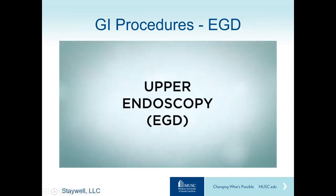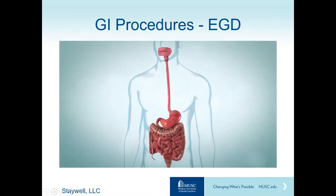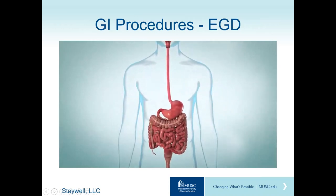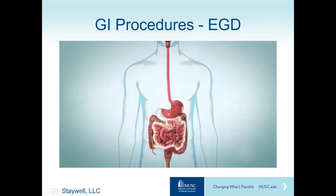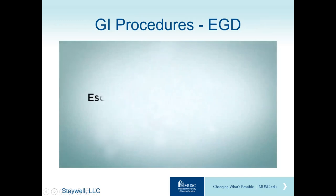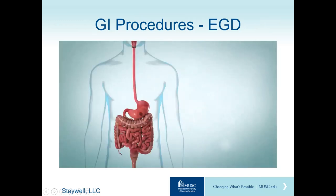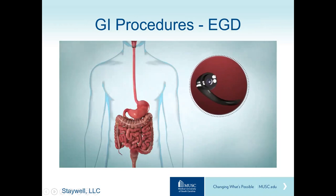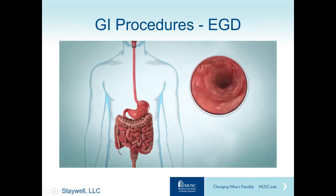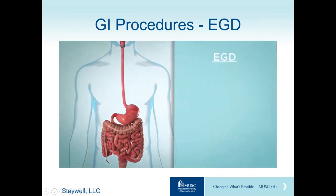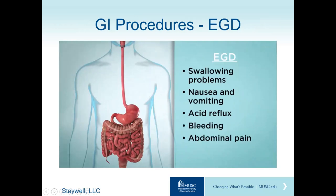Upper endoscopy is a test that looks inside the upper gastrointestinal tract, including the esophagus, stomach, and duodenum — the first part of the small intestine. Also known as esophagogastroduodenoscopy or EGD, it uses a long, thin, flexible endoscope with a light and tiny camera. The test helps find ulcers, infection, or growths, and can show the causes of swallowing problems, nausea and vomiting, acid reflux, bleeding, and abdominal pain.